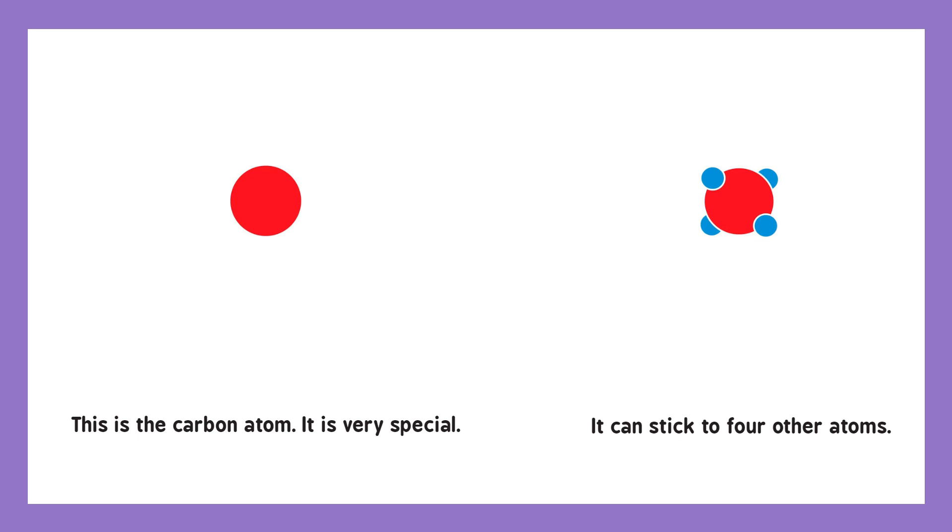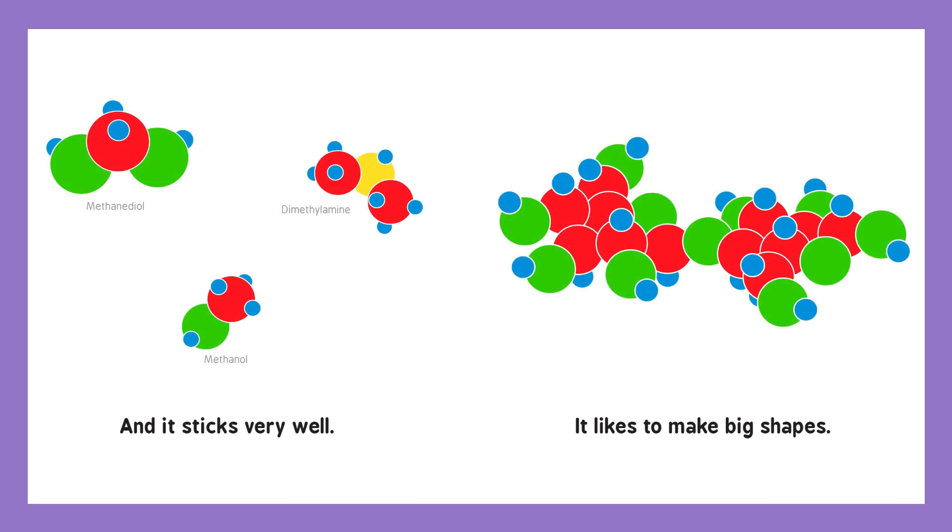This is the carbon atom. It is very special. It can stick to four other atoms. And it sticks very well. It likes to make big shapes.